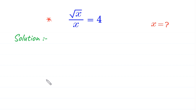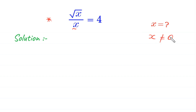Hello everyone, welcome to solving this radical equation: root x over x is equal to 4. Our job is to find all possible values of x. Since x is in the denominator, x cannot be equal to 0, because dividing by 0 is undefined.